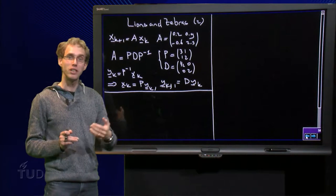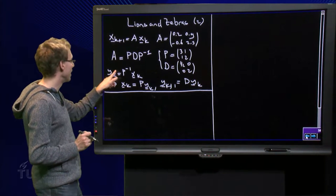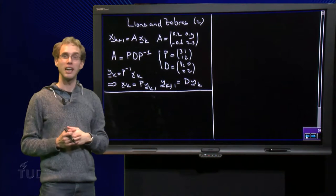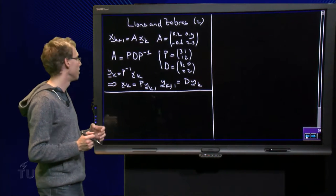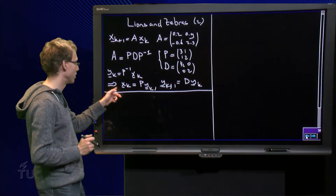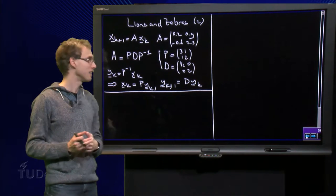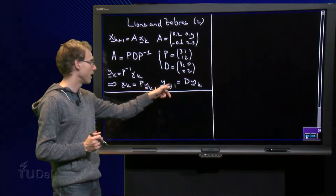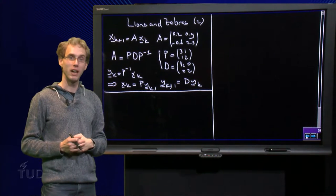And then we know that the choice y_k equals P inverse times x_k is a clever choice, because this implies, well of course, x_k equals P times y_k, but also y_k+1 equals D times y_k.